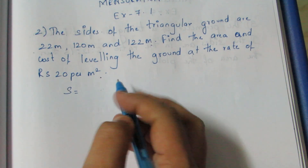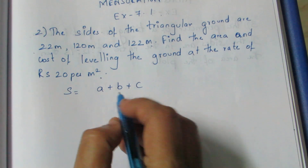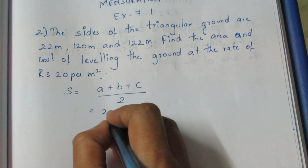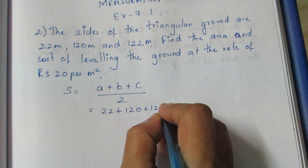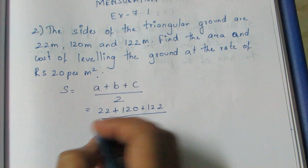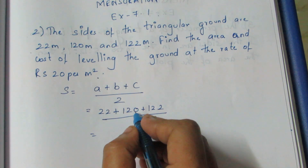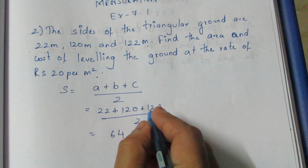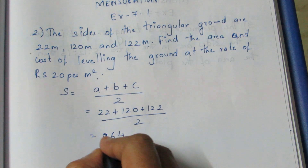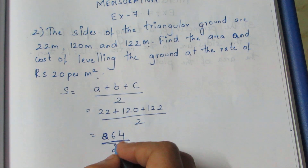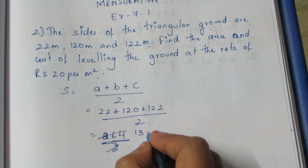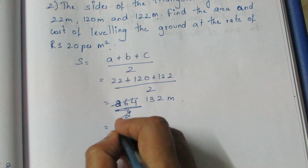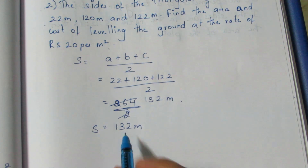First, find the semi-perimeter S equals A plus B plus C divided by 2. So S equals 22 plus 120 plus 122 divided by 2, which is 264 divided by 2, equals 132 meter. So the semi-perimeter is 132 meter.